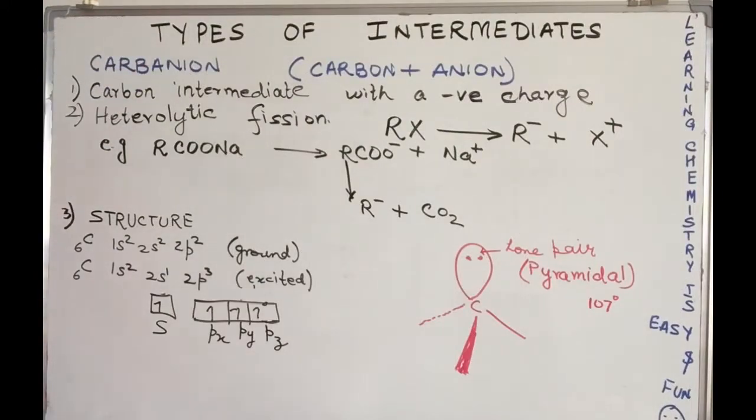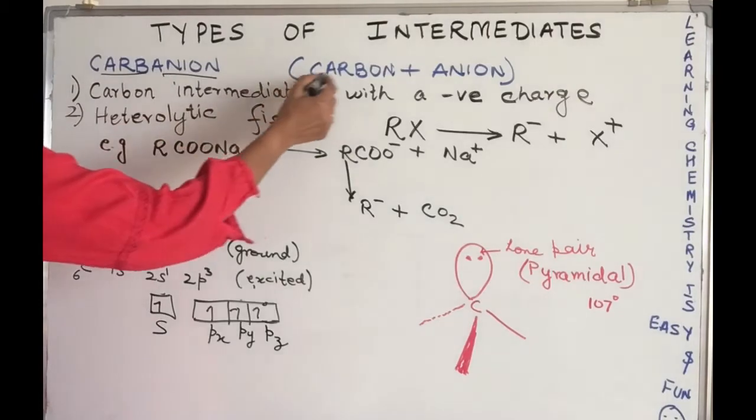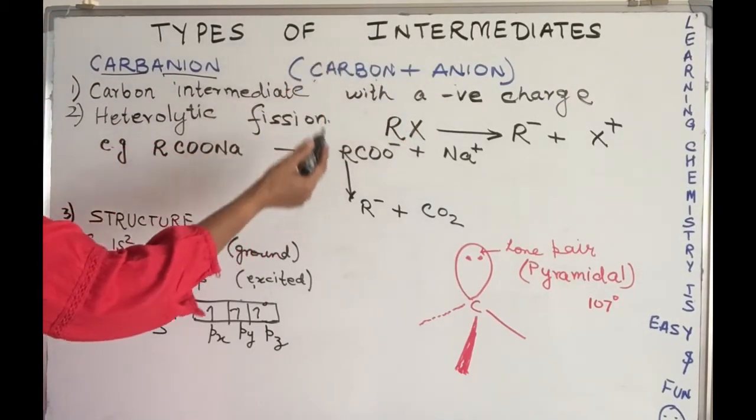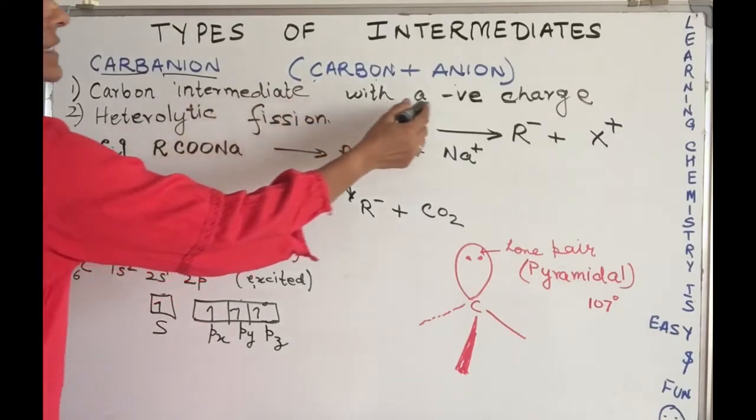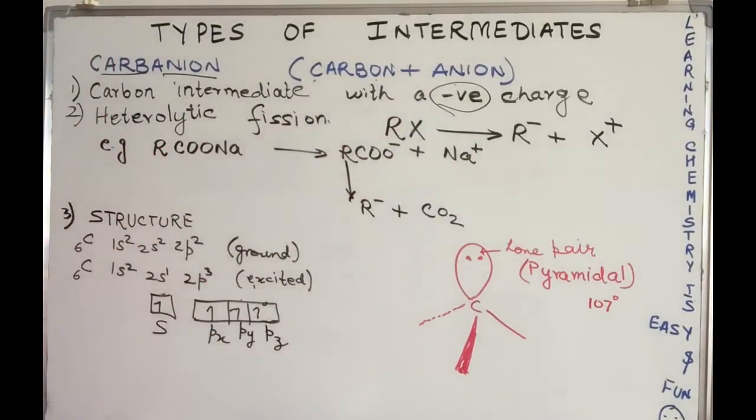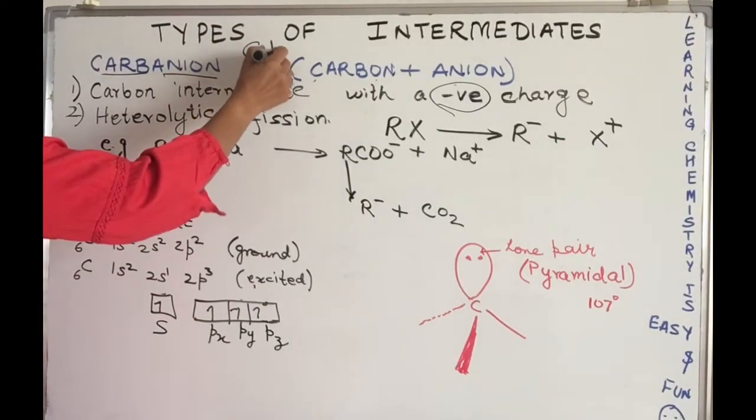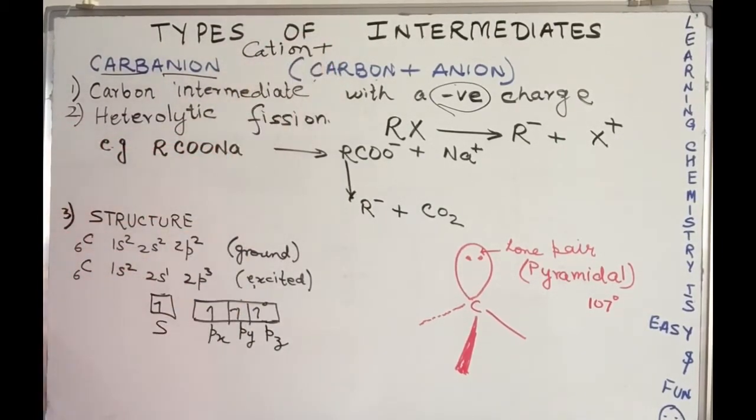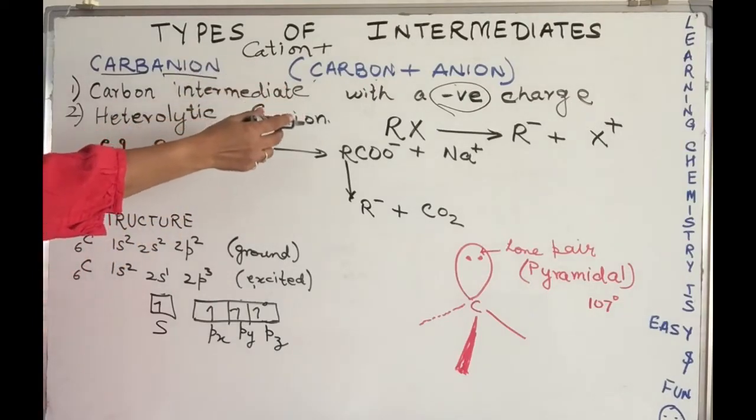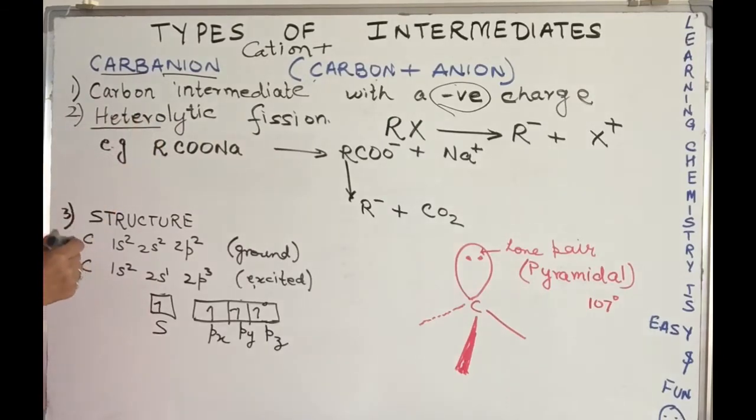Let's start with the first intermediate: carbon anion or carbocation. Carbon anion means an anion in which the carbon carries a negative charge. Cation is a positively charged ion. Anion is the ion with a negative charge. How can we get a carbon with a negative charge? What kind of bond breaking results in a carbon anion?